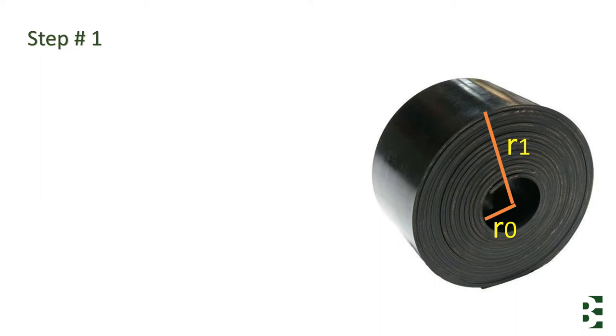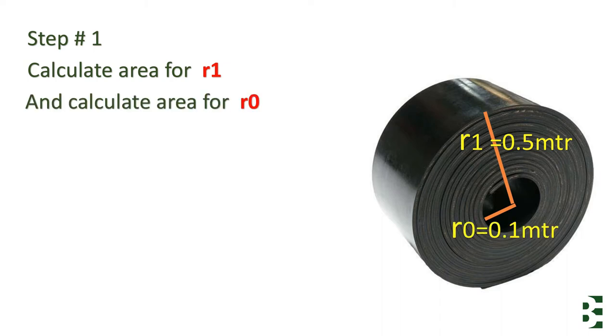In step one we will calculate area for R1. For example, we have R1 equals 0.5 meter. And calculate area for R0 as well, it's 0.1 meter, and we have a formula pi into R square.